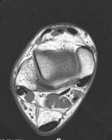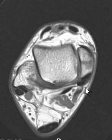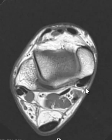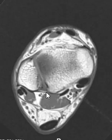Hello, this is Dr. Gay from First Look MRI, and this is an example of the most common accessory muscle in the posterior ankle. This is called the flexor digitorum accessorius longus, or the FDAL muscle.